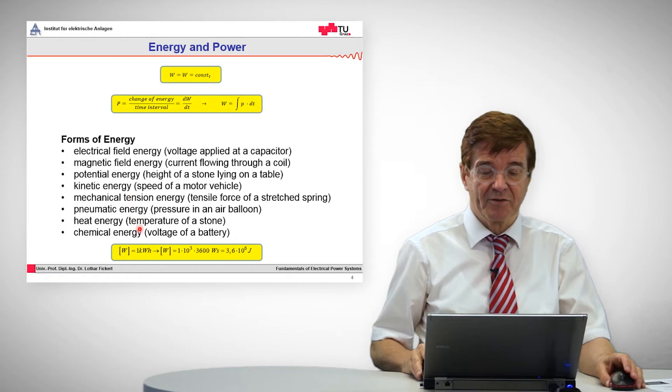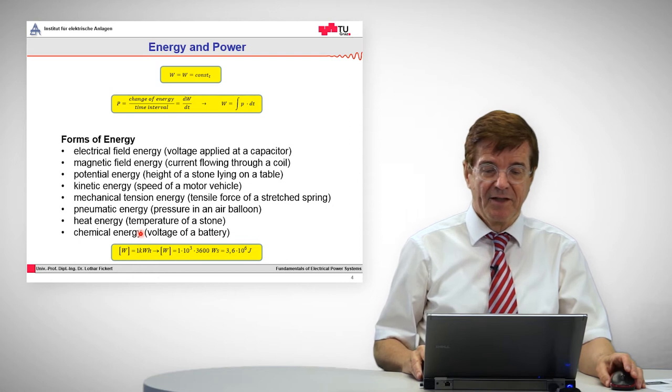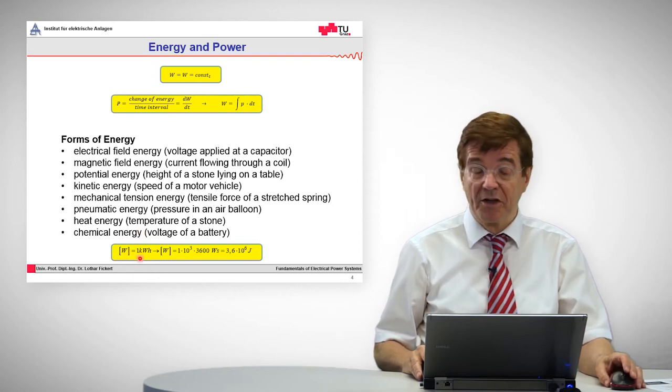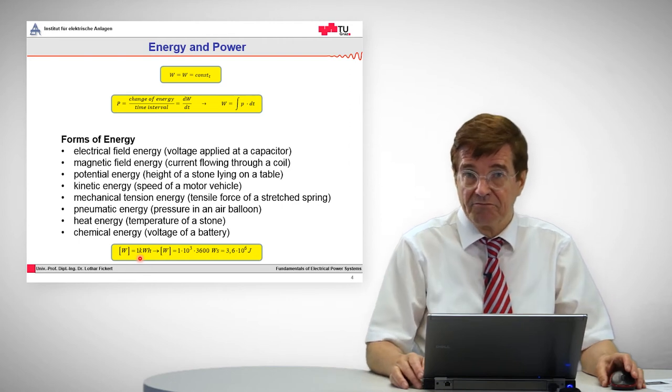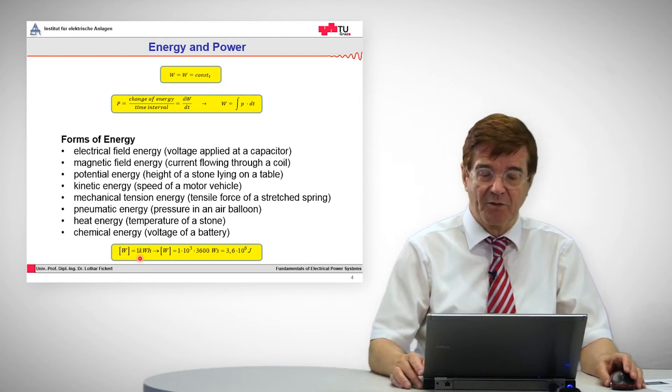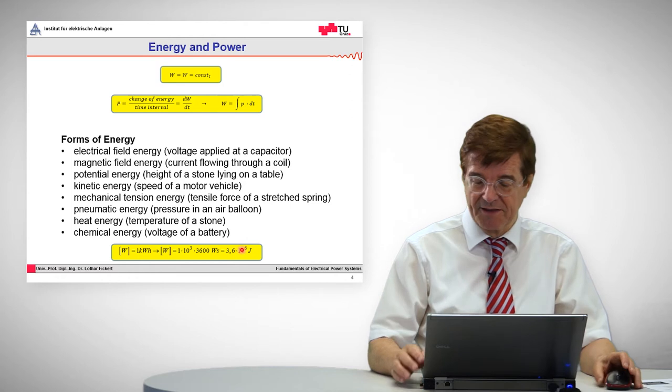The other forms of energy are not so important in electrical engineering. At the bottom we see the conversion of the typical units. Electrical energy is measured mainly as kilowatt hours. The physical term for kilowatt hours is the joule, and the conversion between kilowatt hours and joules is given here.